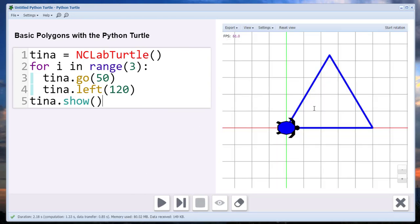And there is a triangle. It drew a line 50 units long, then it turned 120 degrees, drew another line 50 units long, turned another 120 degrees, and drew one more line 50 units long, and once again turned 120 degrees.